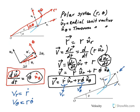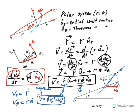Remember, velocity has to always be tangent to the path. The magnitude of velocity is the square root of V_R squared plus V_theta squared, just like in the XY coordinate system it would be the square root of V_X squared plus V_Y squared. Each coordinate system gives you different components: in the R-theta system, the radial component is R-dot and the transverse component is R theta-dot.